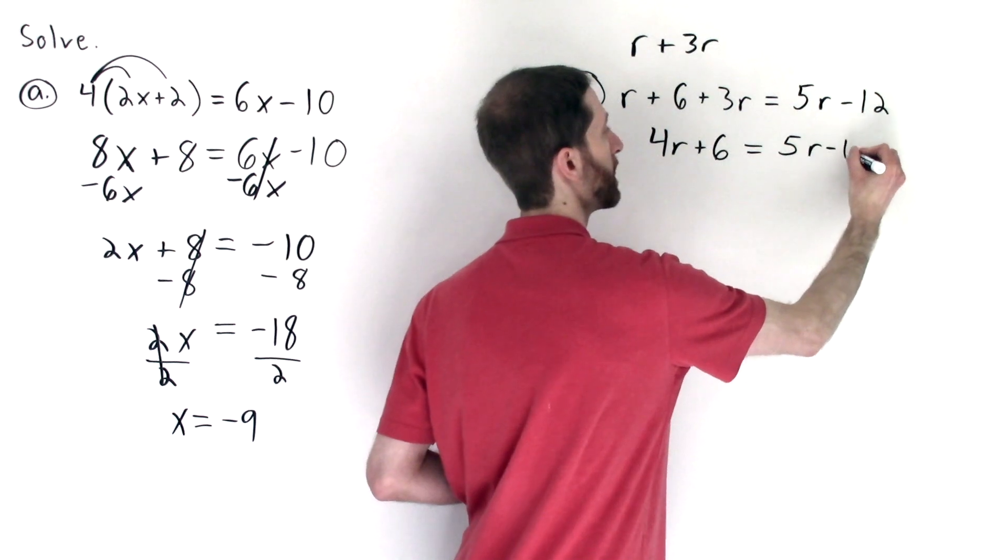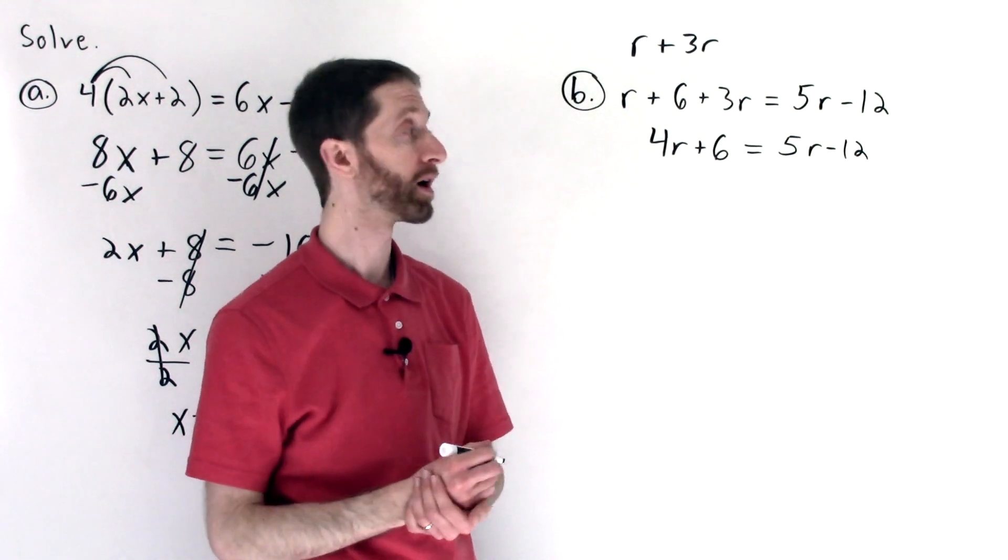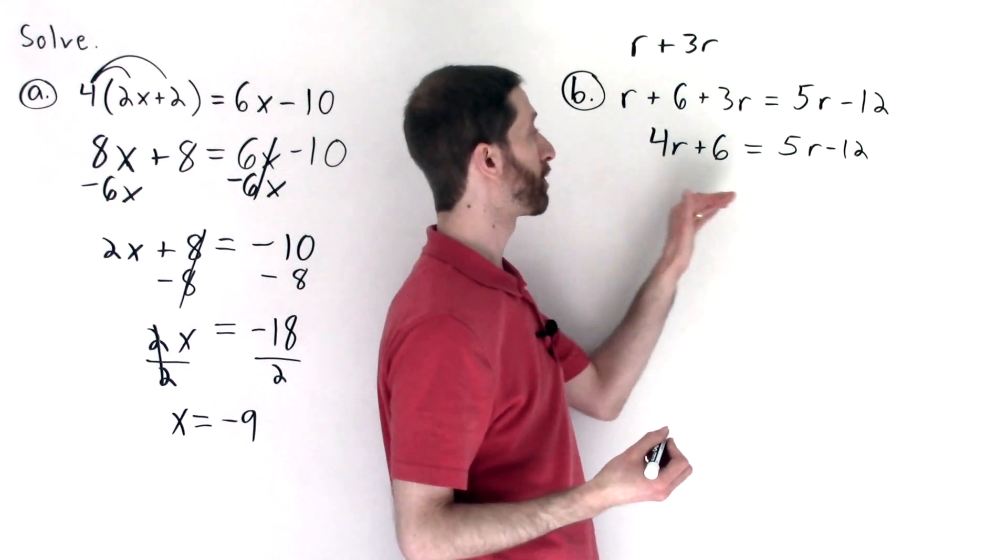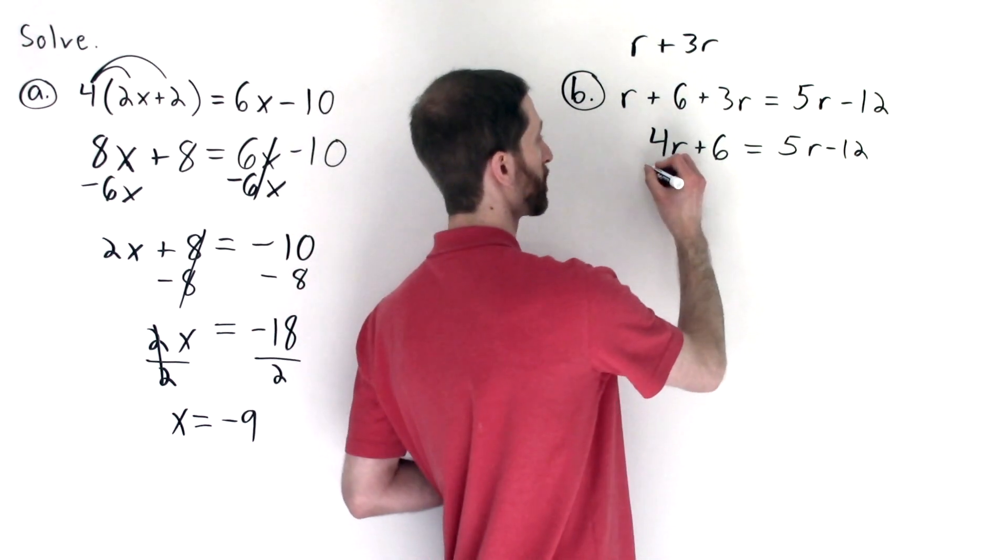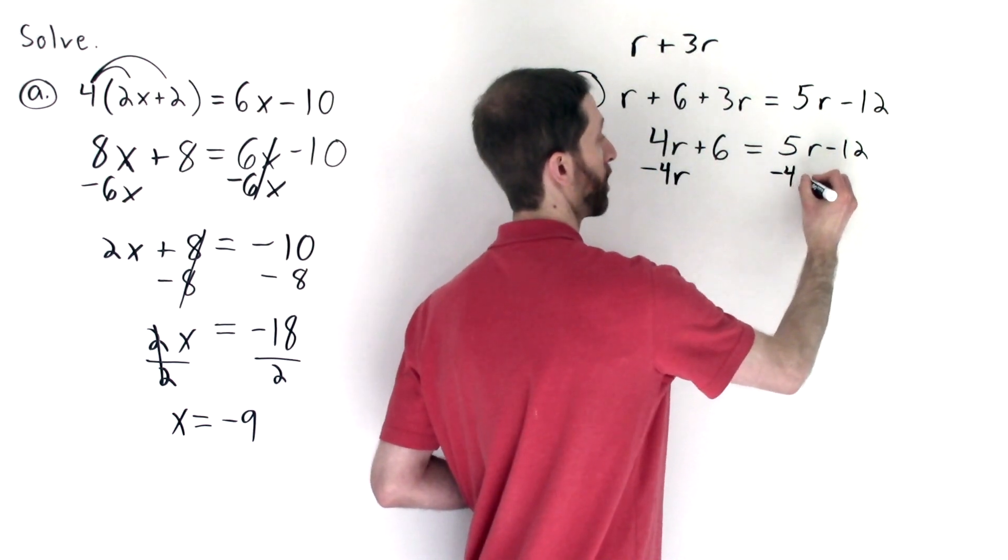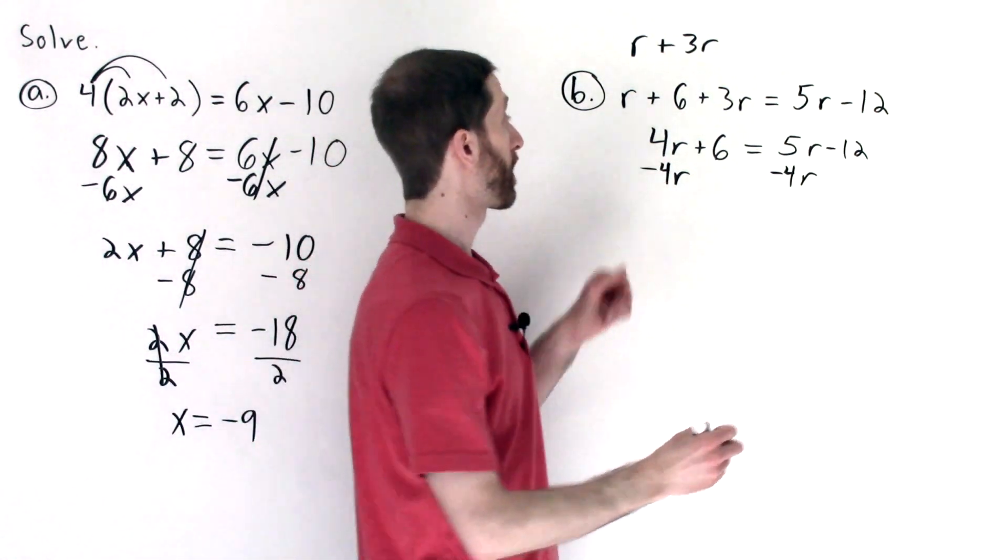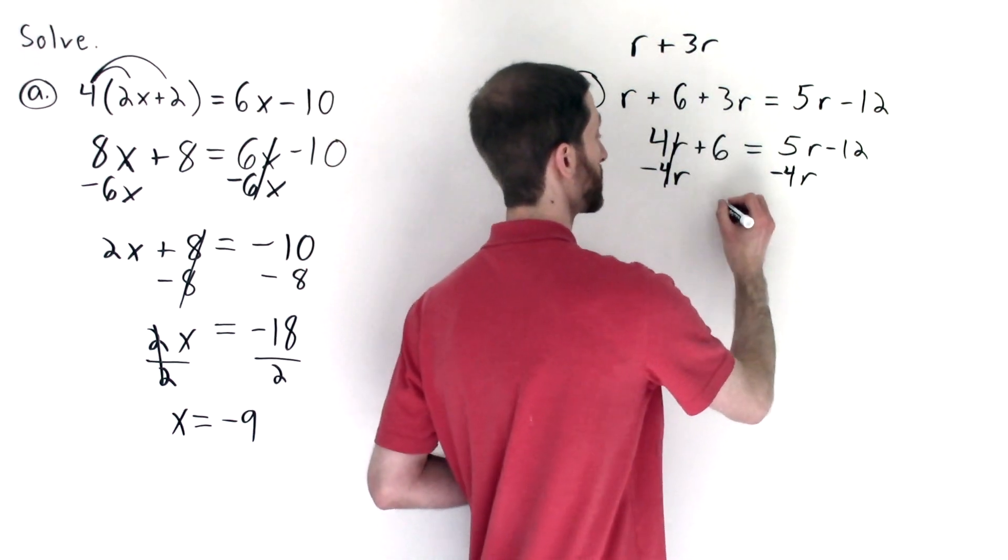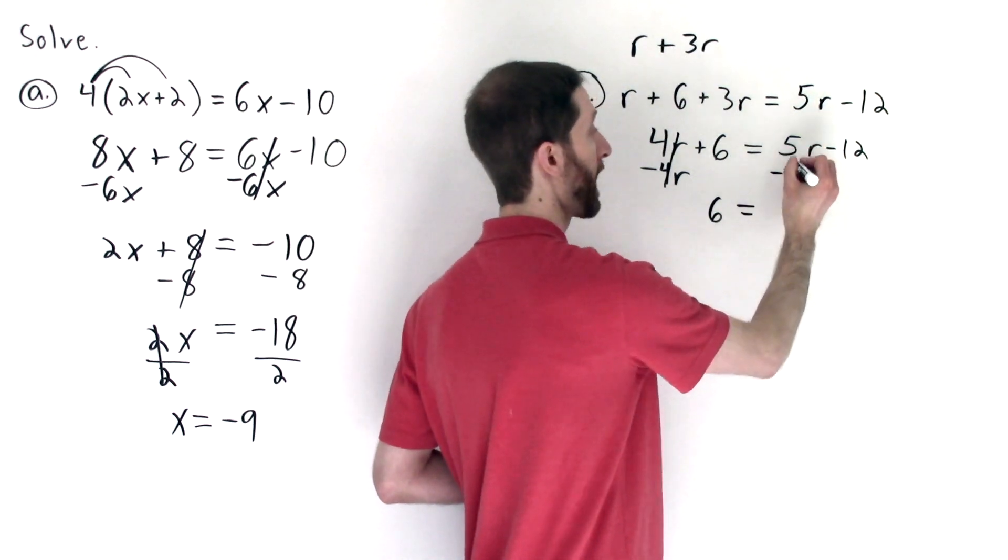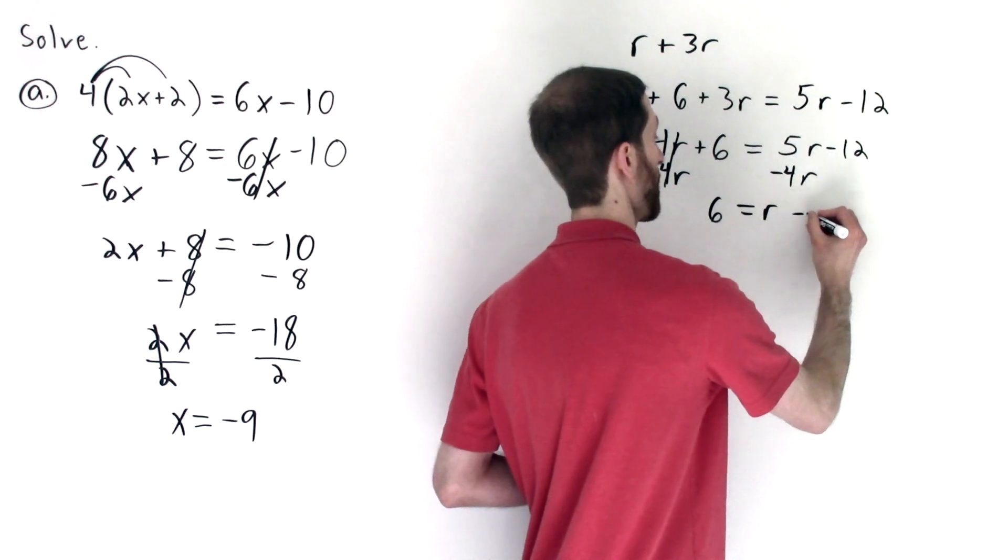Now what we have remaining is an equation with variables on both sides. And so we're going to take that apart like we know how. I'm going to move the 4r to this side. So I will subtract 4r to undo positive 4r. And I'll do the same thing to both sides, of course, to the equation. Next, the 4r's cancel, leaving us with plus 6 is equal to 5r minus 4r is r minus 12.